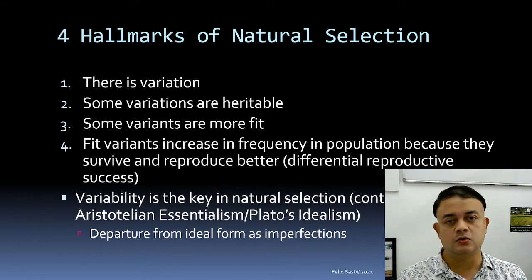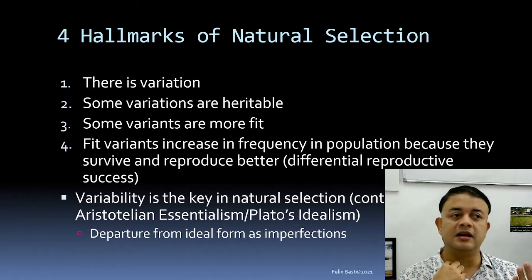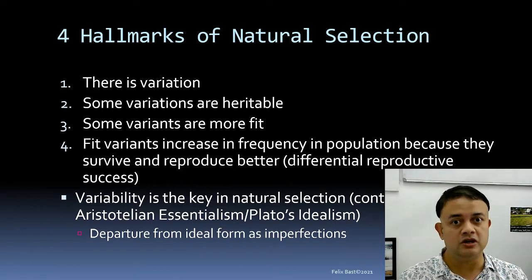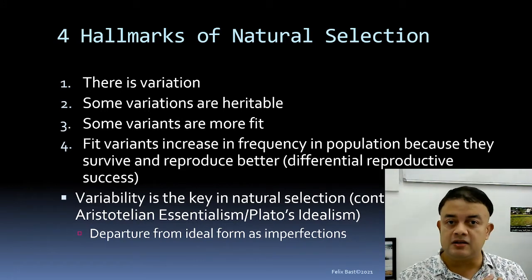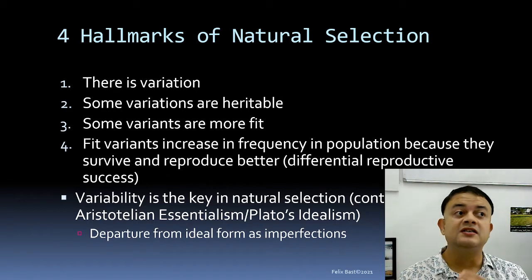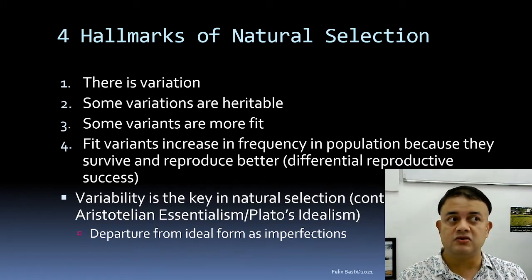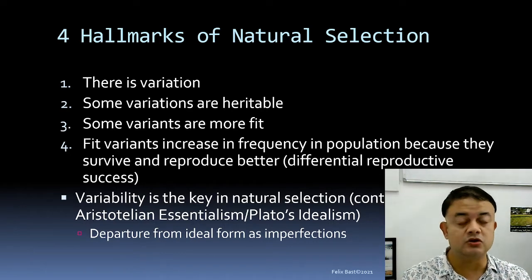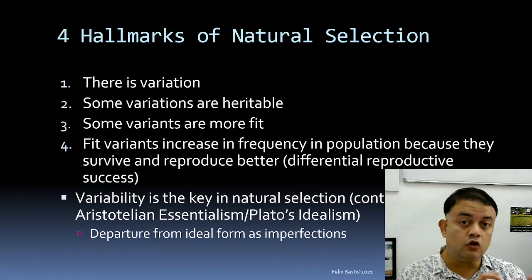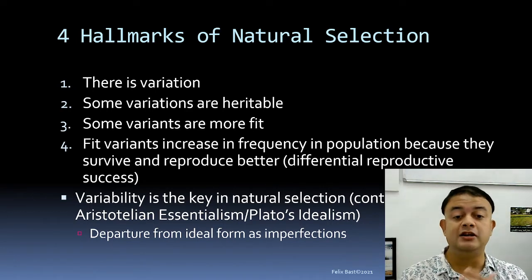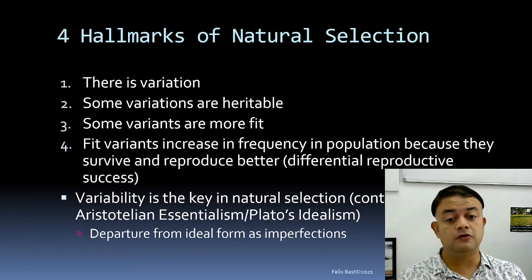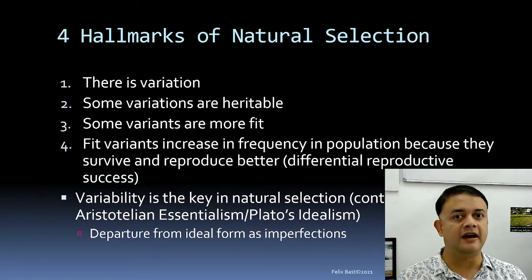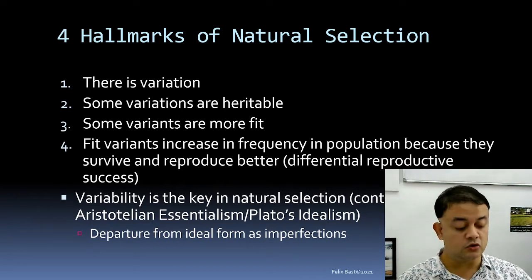Organisms compete among each other within a species and population — for mates and resources. Variants better adapted to the local habitat survive to reach reproductive age and transmit genes to the next generation. That is the principle of natural selection in a nutshell. This contrasts with Aristotelian essentialism or Platonic idealism, in which departures from the ideal form are regarded as imperfection.